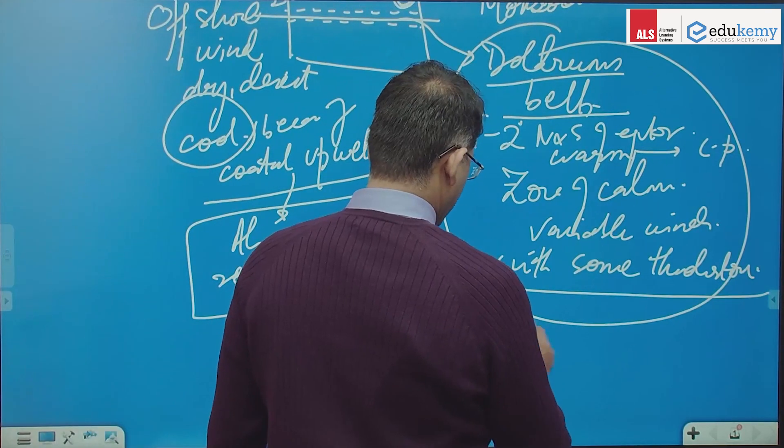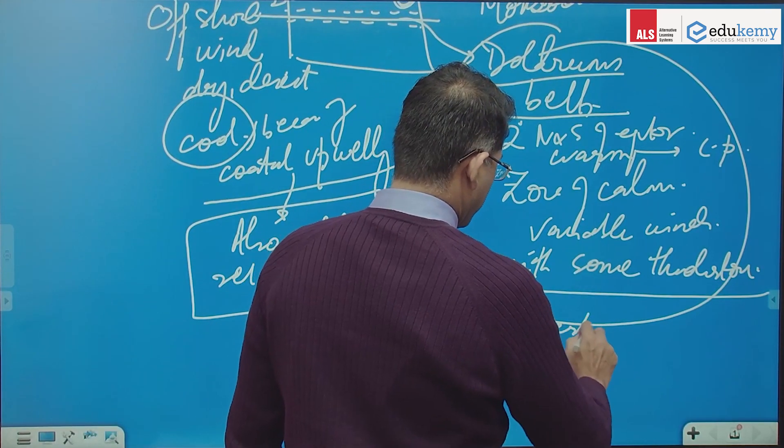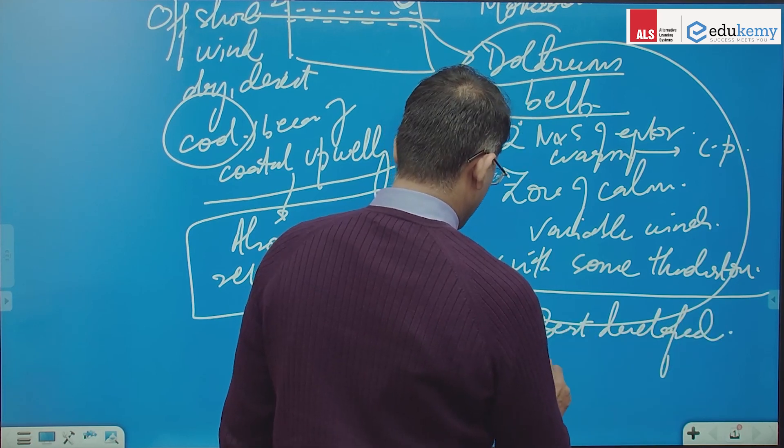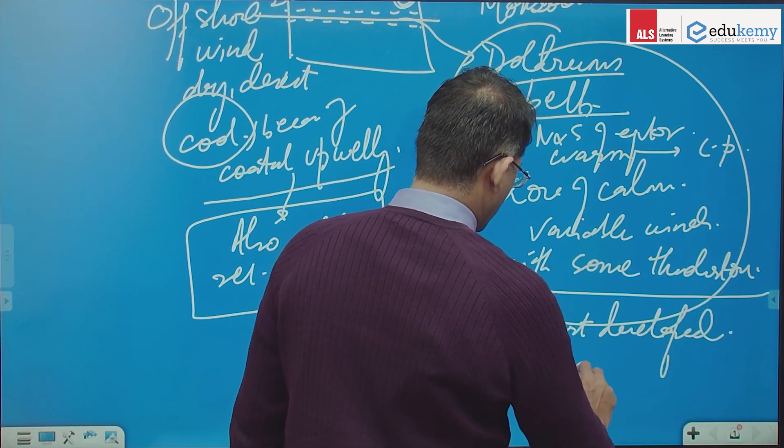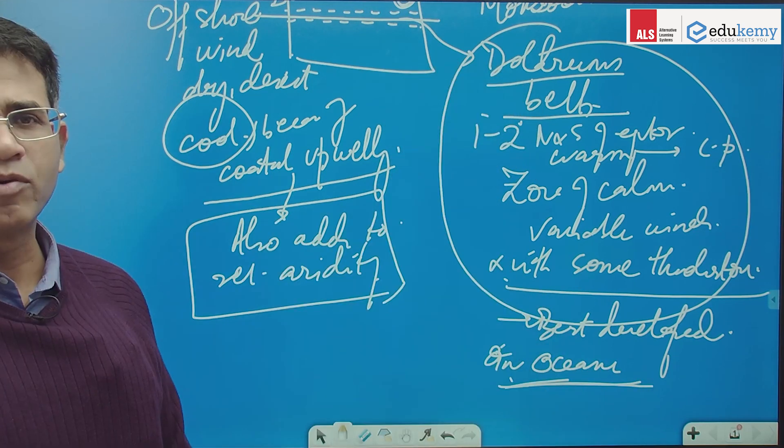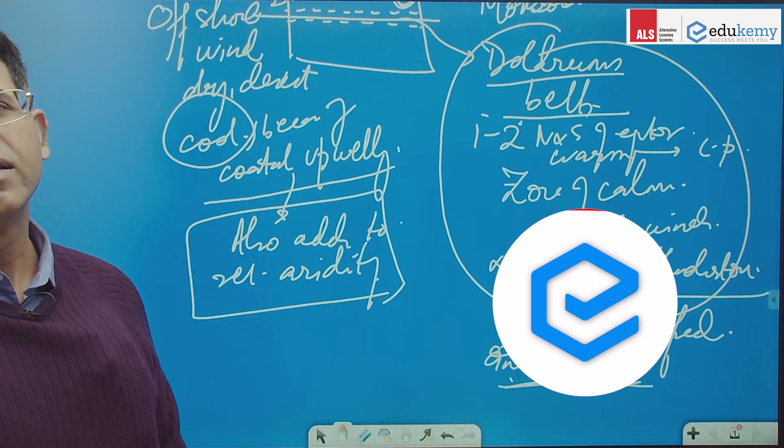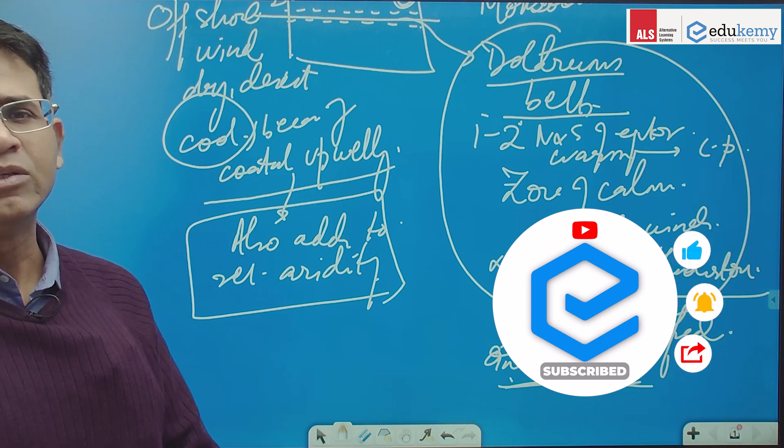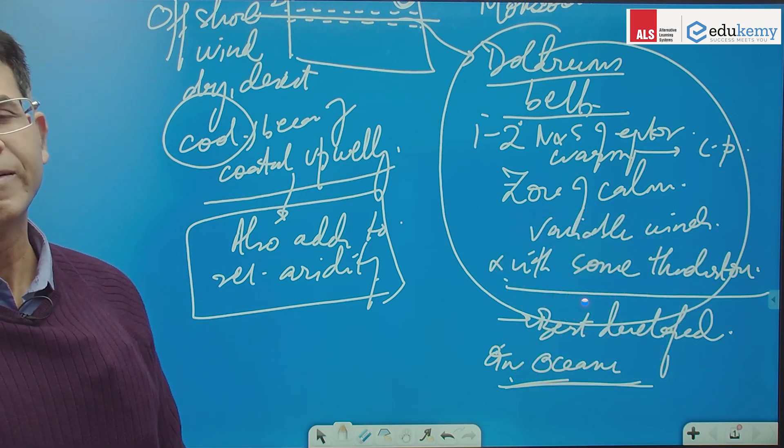this is best developed on the oceans. The broader zone is ITCZ, which is equivalent to your thermal equator. There is a very narrow zone, which is the doldrums.